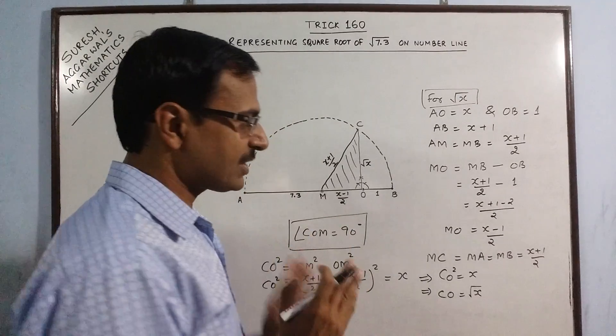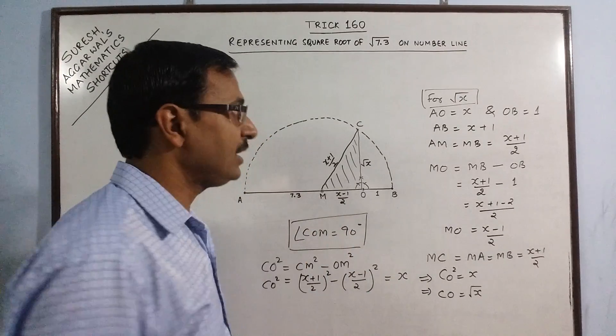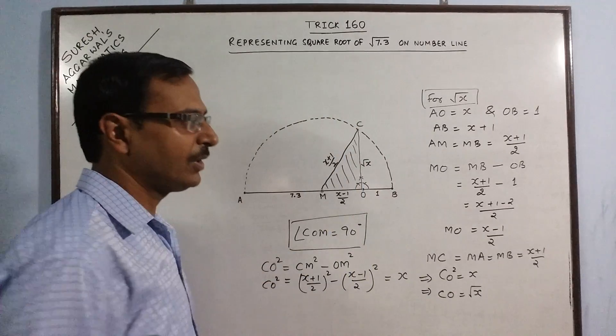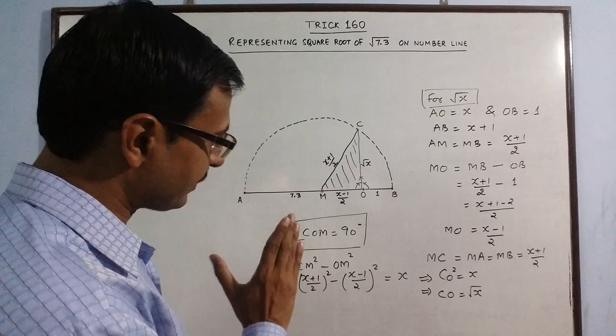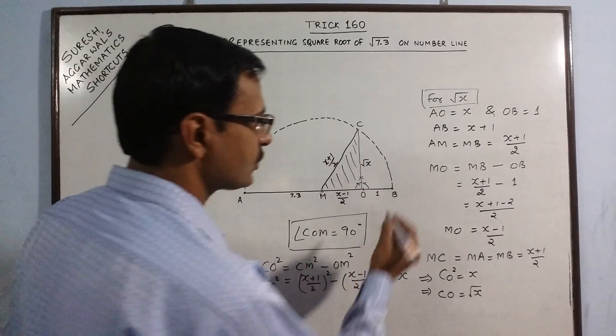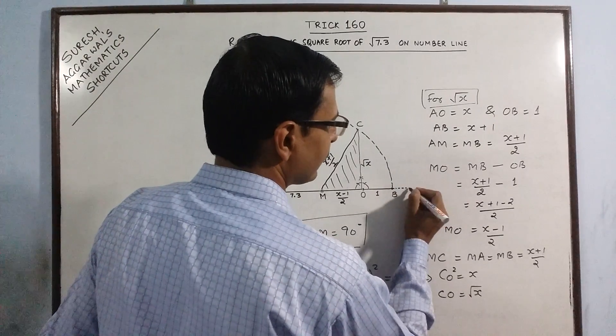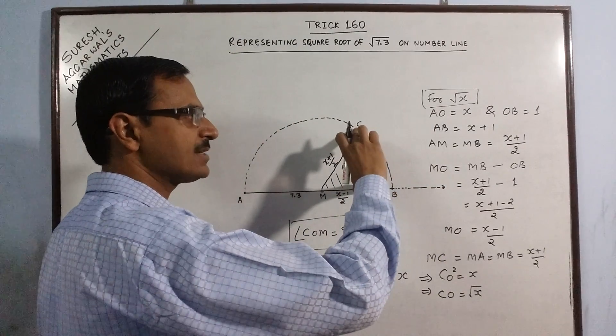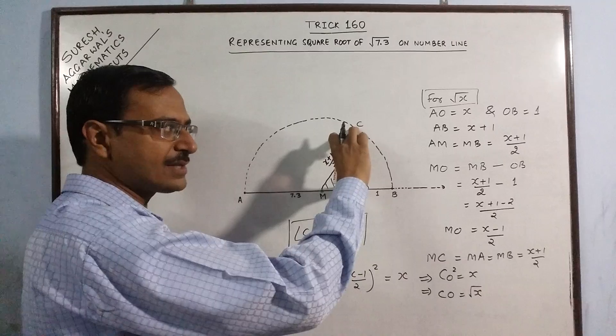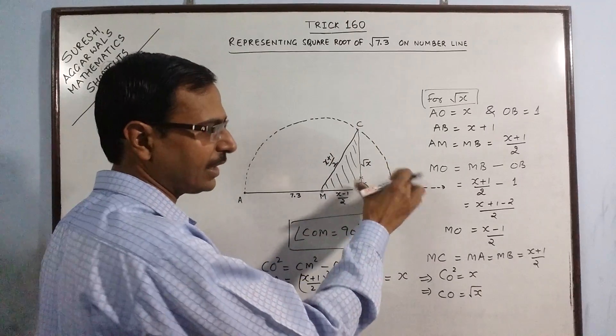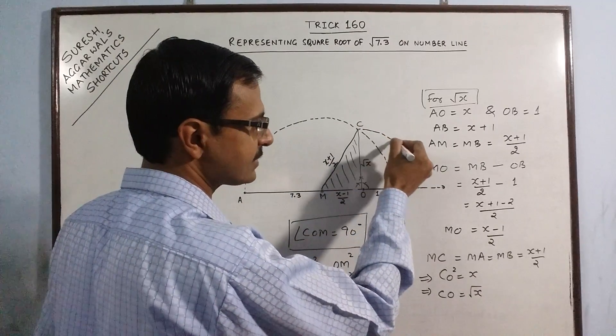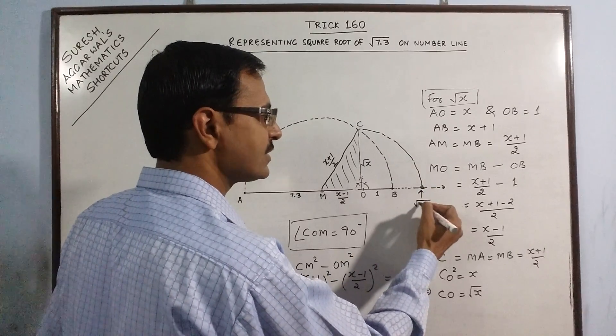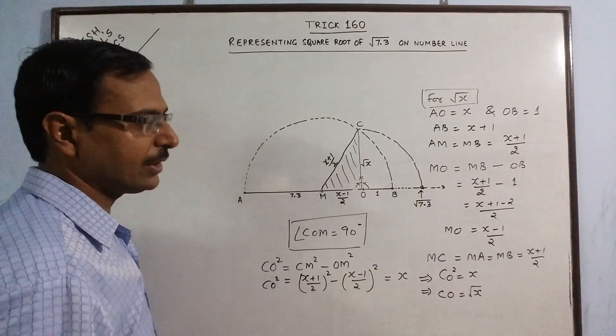This is the justification behind the representation of any square root of a decimal number on the number line. If you want to represent this actually on a number line, then you can produce this to form a number line and then with O as center and OC as radius, draw an arc and bring it on the number line. This value will correspond to √7.3 on the number line.